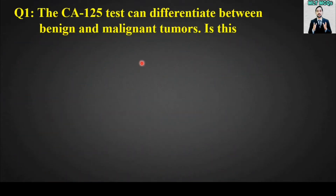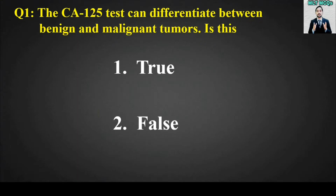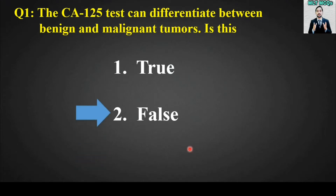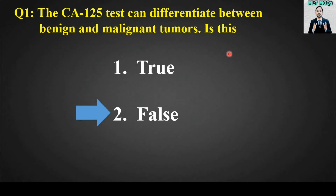MCQ number one: The CA-125 test can differentiate between benign and malignant tumors — is this true or false? The right answer is option number two: False. This is false because CA-125 is not always specific to benign and malignant tumors; it is also increased in some inflammations and benign conditions.